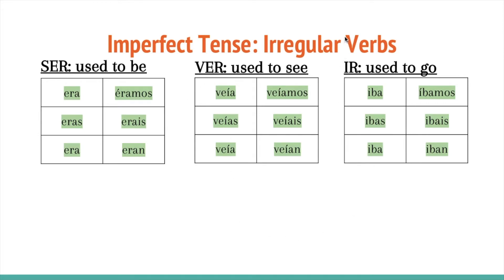Then we move on to ir, which means 'used to go.' The conjugations are: iba, ibas, iba, íbamos, ibais, iban. That means to go.